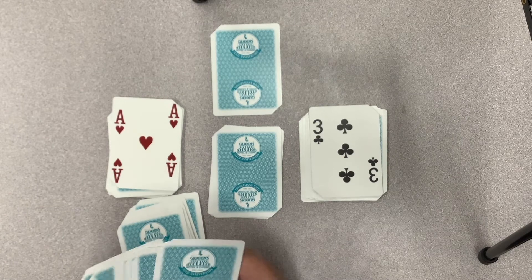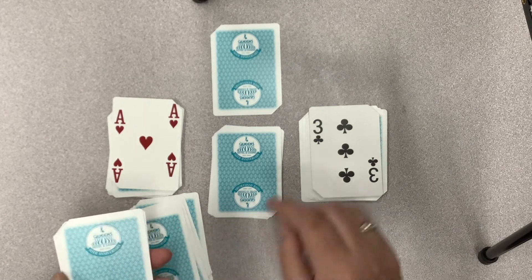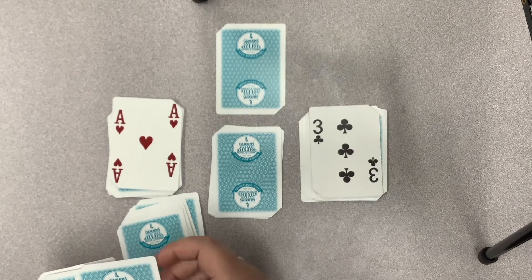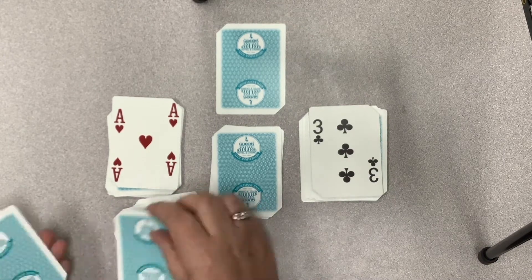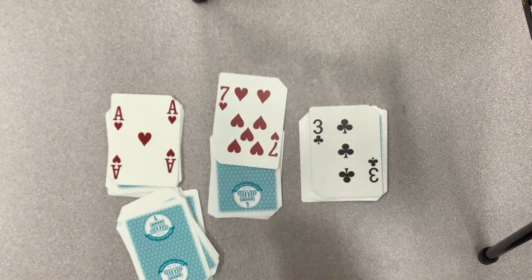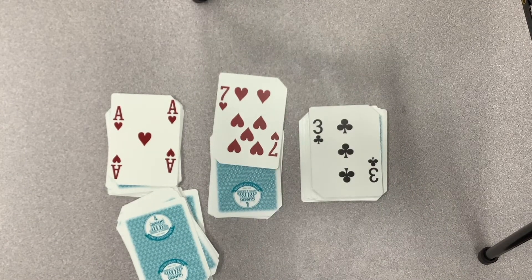Now if I count the cards that I have left in my dealing hand, I should know the value of this card here. So let's see if we got it correct. One, two, three, four, five, six, seven. This should be a seven. Let's see if we're right. Ta-da! Not magic, that's just math.